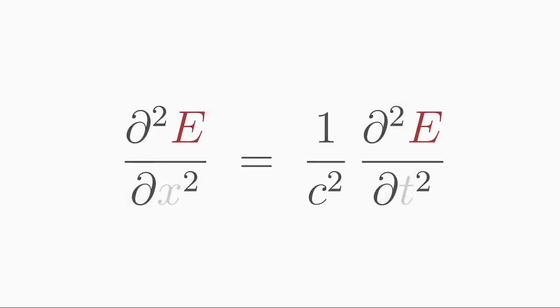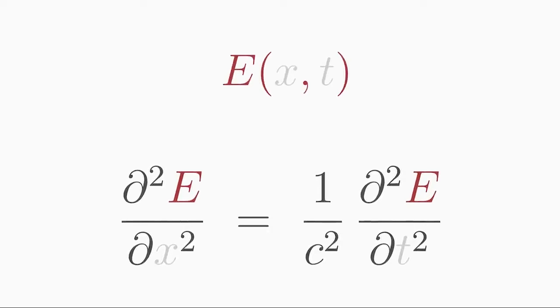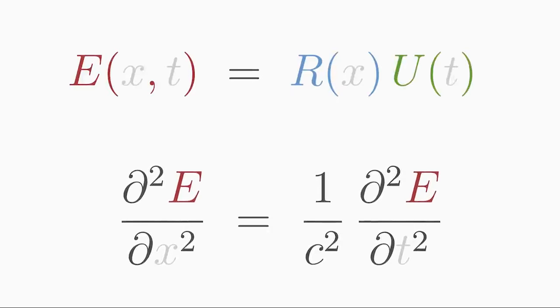Here we make a product ansatz for the searched solution E. E is equal to r times u. We assume that the solution E can be split into a product of two functions that we call r and u. One function r depends only on x and the other function u depends only on t.